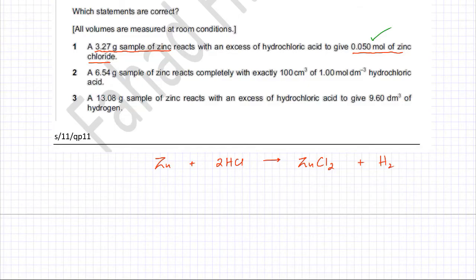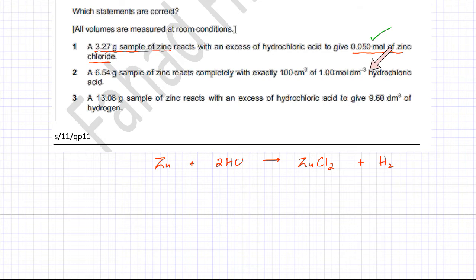Similarly, let's now check option number 2. In option number 2, you have 6.54 grams of zinc reacting completely with 100 cm³ of 1 mol per dm³ hydrochloric acid. We're going to check whether there's a complete reaction — specifically whether zinc reacts completely or not.